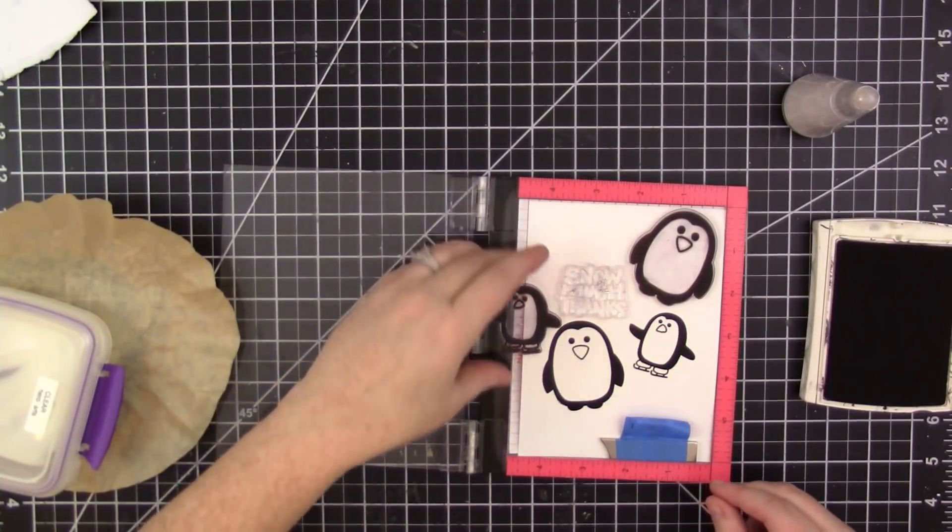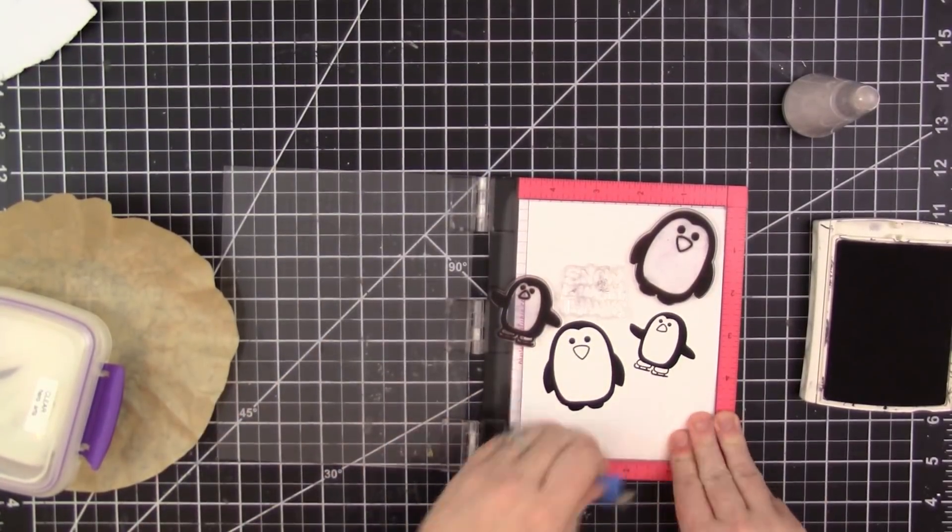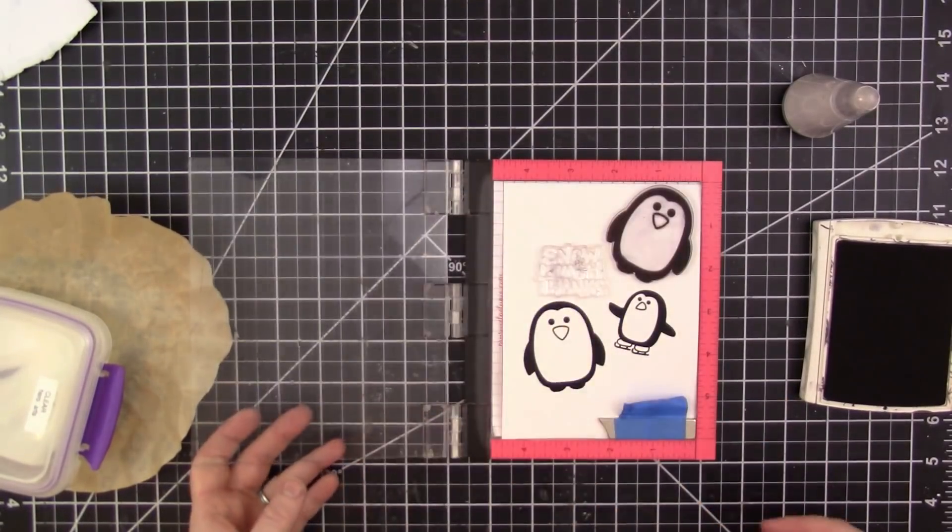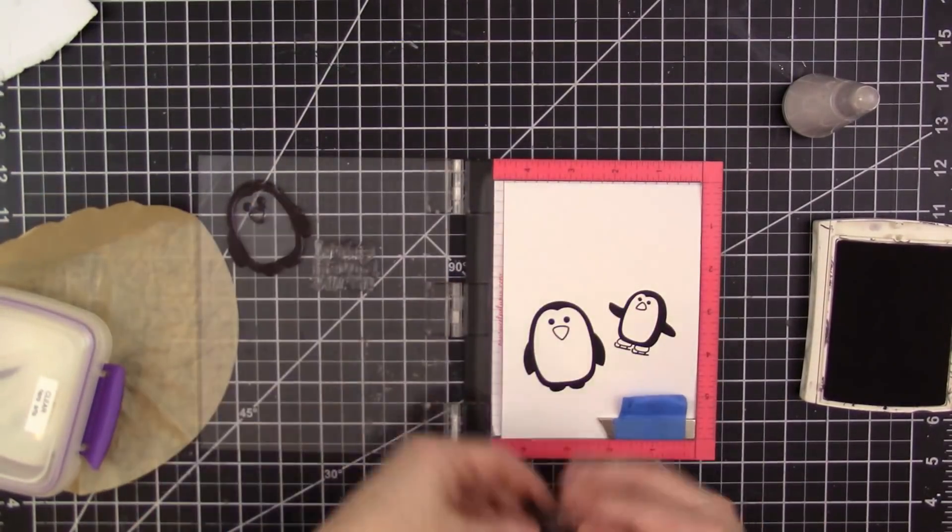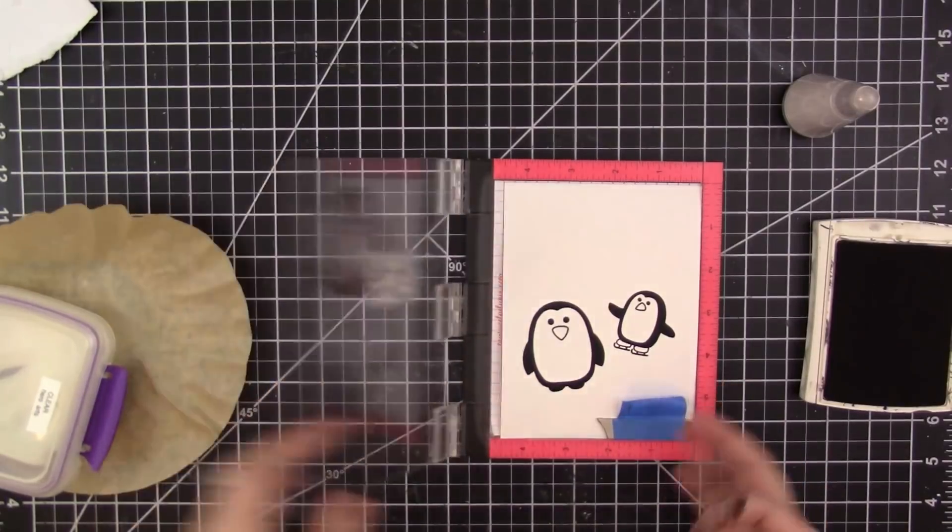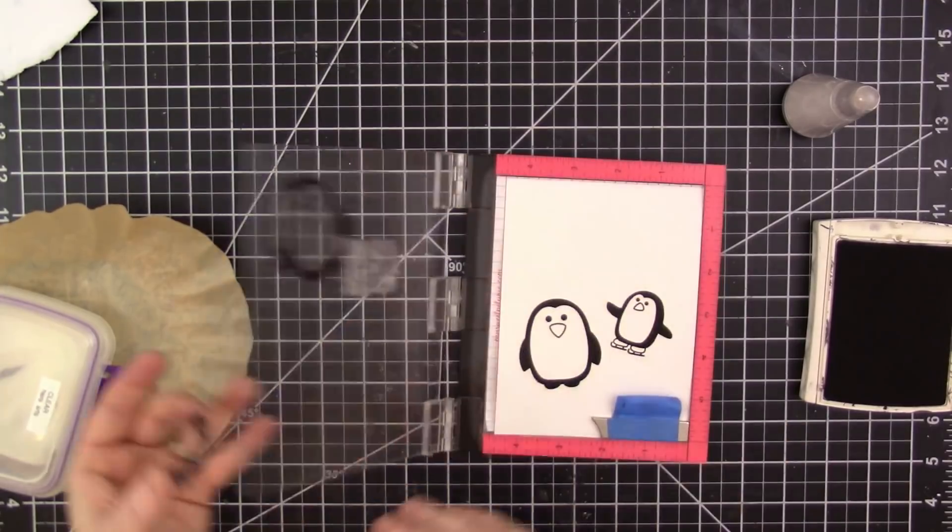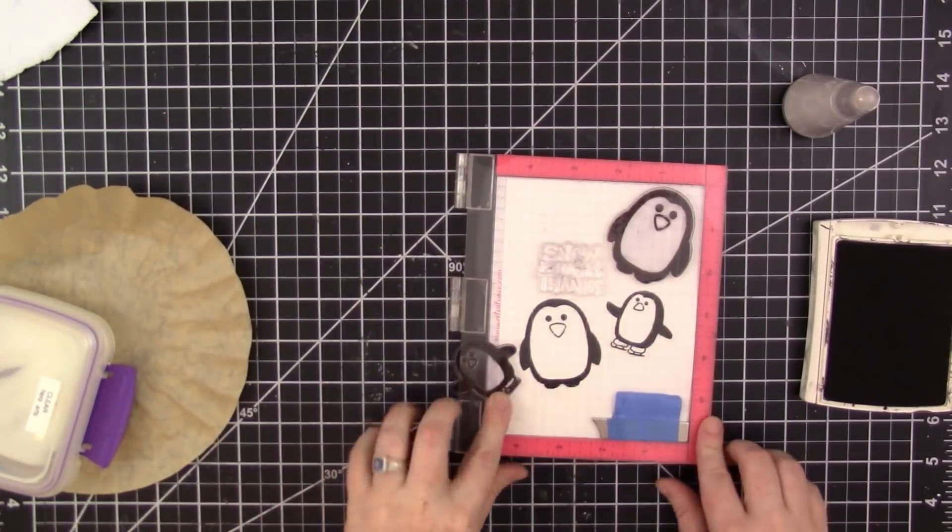Just to make sure that they're completely dry and there's not any more ink on them. That way I don't transfer any ink back onto my project because I've done that before when I'm almost done with a project and then I accidentally smudge some ink on it. So I just try to be careful not to do that.